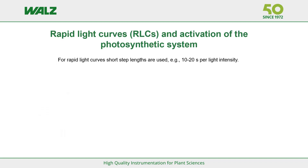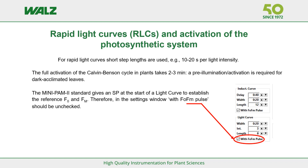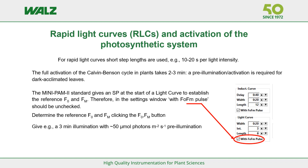Rapid light curves represent a somewhat different challenge. Light steps of maybe 10 or 20 seconds are used, but activation of the Calvin-Benson cycle takes 2–3 minutes. If a rapid light curve experiment is carried out with a dark-acclimated leaf, experimental artifacts are almost unavoidable. For the Minipam 2, the following protocol is suggested when dark-acclimated leaves are used: turn off the initial saturation pulse by unchecking 'initial pulse'; determine the reference F0 and Fm by clicking the F0Fm button; give a manual 2–3 minute pre-illumination of, for example, 15 µmol photons m⁻² s⁻¹; and finally start the light curve. Thank you for your attention.